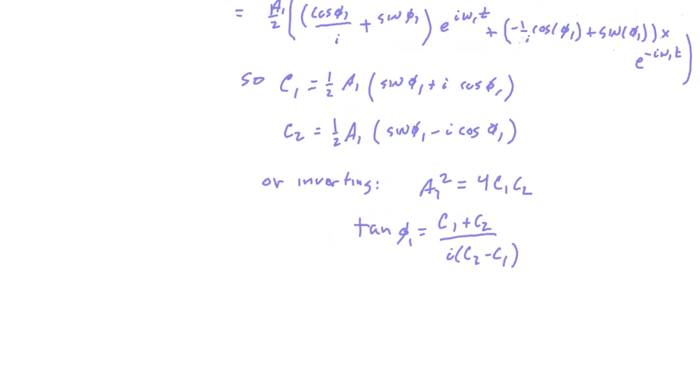So that's done. We know what C1 and C2 are in terms of A and the phase angle phi.